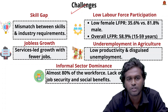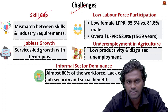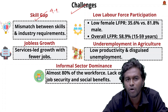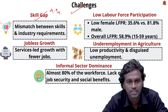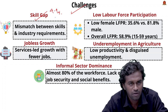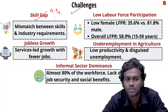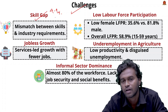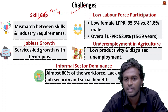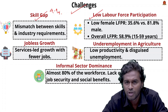Now, the challenges in utilizing the workforce: the first major challenge is the skill gap. Only 4.4% of the youth population has received formal skilling, creating a mismatch between industrial requirements and the skills a person has, which leads to unemployment.